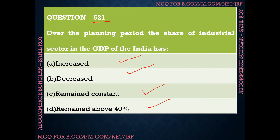The first industrial policy in India was in 1948. India is a country where around 70% of the population was agriculturally dependent. Even today, 48.9% of India's population is in agriculture, and they are not even contributing 15% of GDP — they are not even bringing 50% of the population's productivity to the sector.